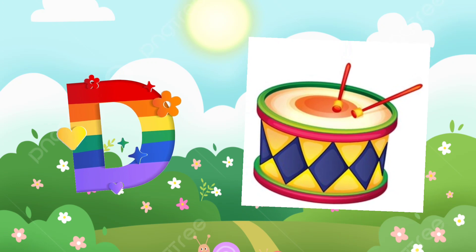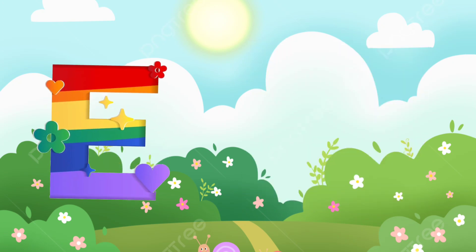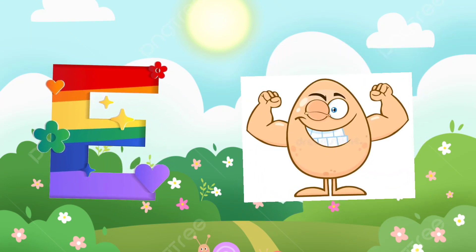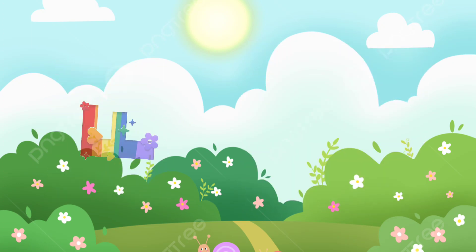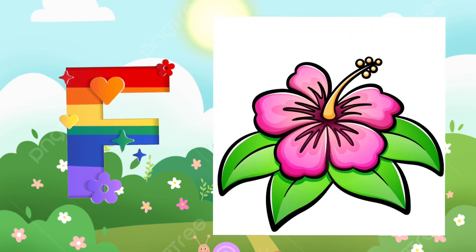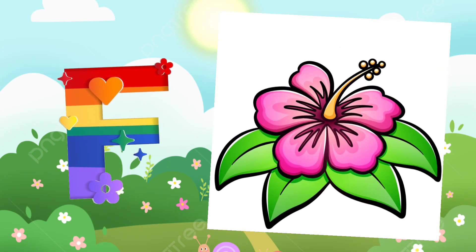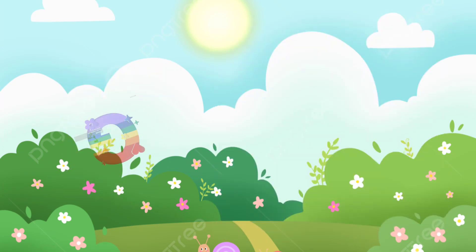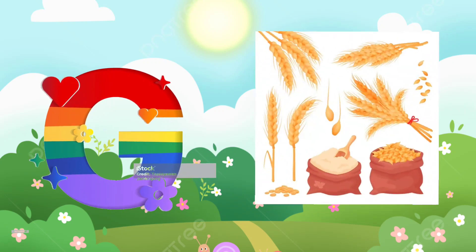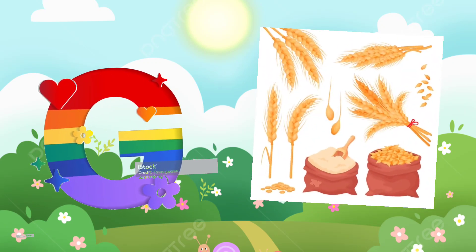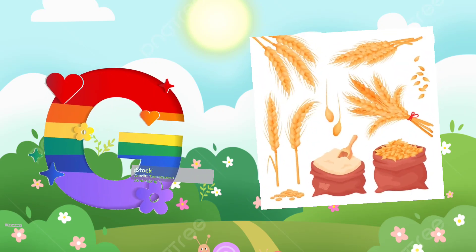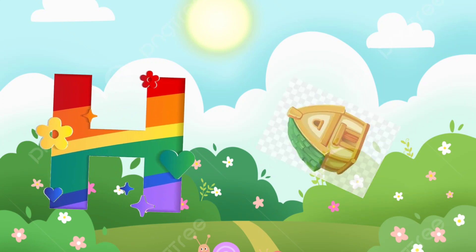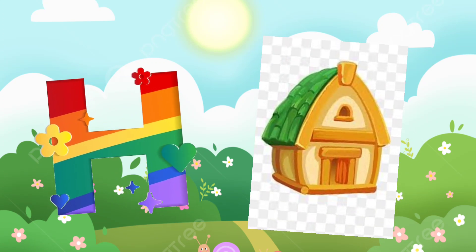E. E is for egg. F. F is for flower. G. G is for grains. H. H is for hut.